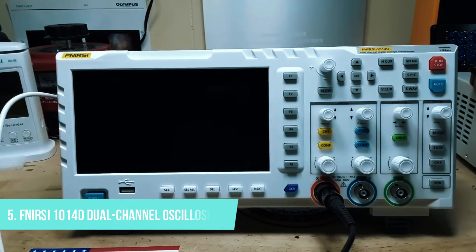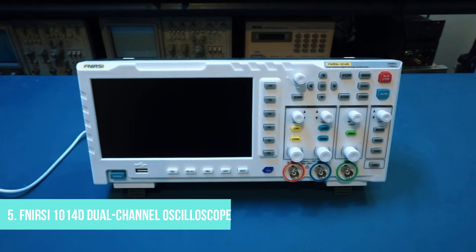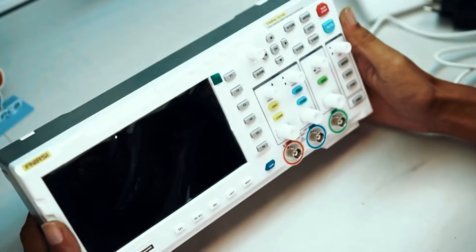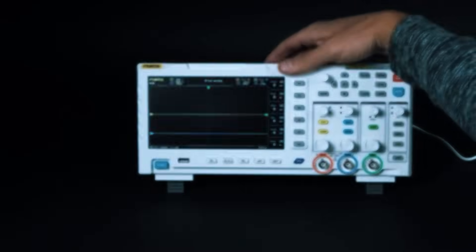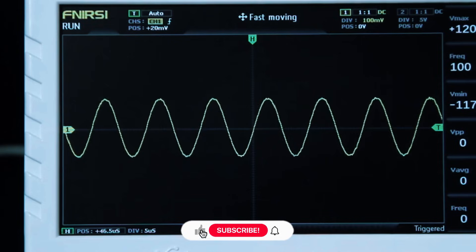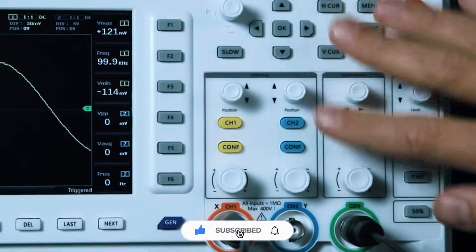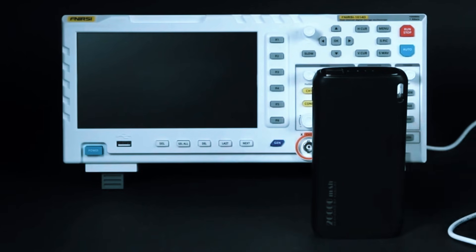Number 5: FNI-RSI-1014D Dual Channel Oscilloscope, Best Budget Pick. We're kicking things off with a solid budget option, the FNI-RSI-1014D. If you're looking for a dual channel oscilloscope that doesn't cost a fortune yet delivers great performance, this one is a strong contender. It's built for hobbyists and students who need a functional scope without dropping serious cash.